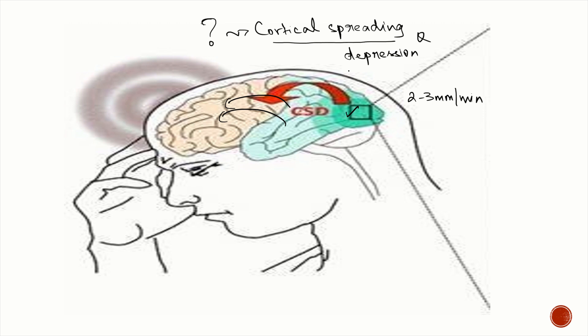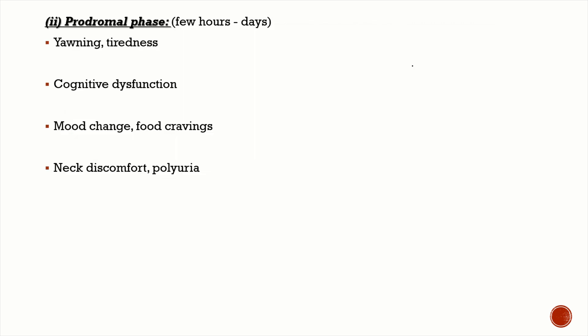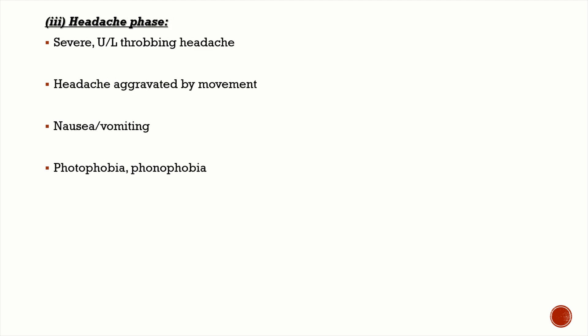The next phase is the prodromal phase, which lasts for a few hours to days. Symptoms include yawning, increasing fatigue, cognitive dysfunction, mood swings, food cravings, neck discomfort, and polyuria.